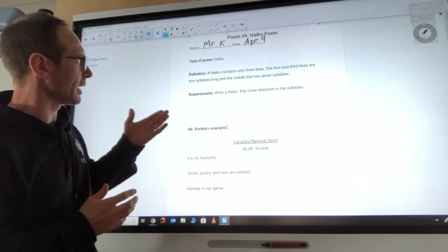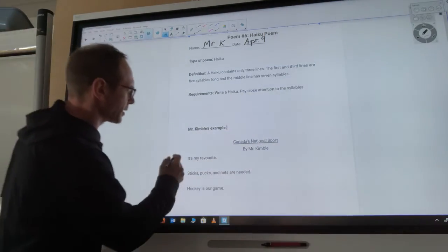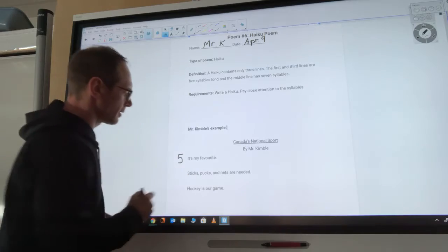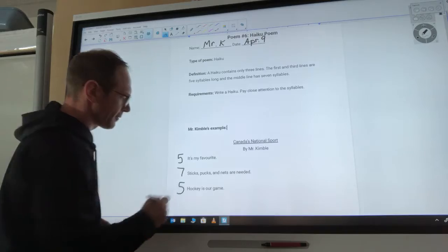The first line has to have five, the second line has to have seven, and the third line has to have five.